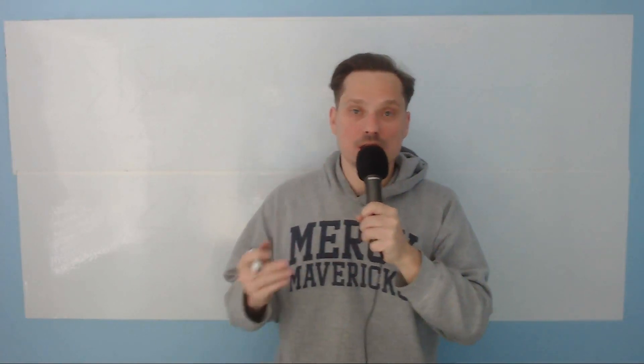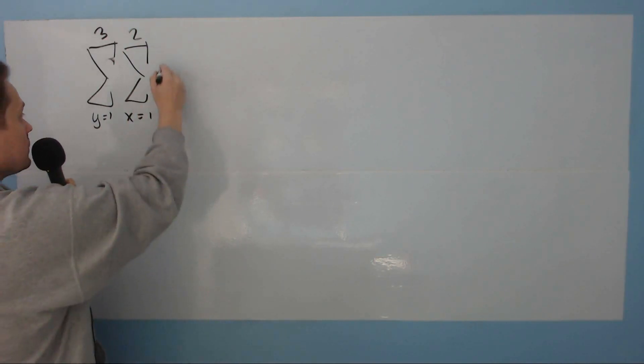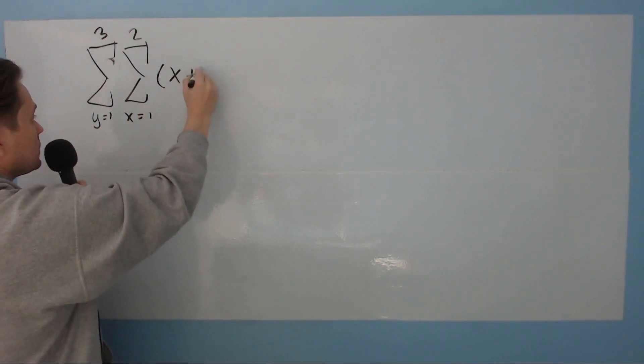And this one, let's take a look at evaluating a double sum. I have this double sum. So this is going to be my outer one. Say y goes from 1 up to 3. And the inner one will look like this. Say x goes from 1 up to 2. And imagine that expression that we want to sum up is x plus y.